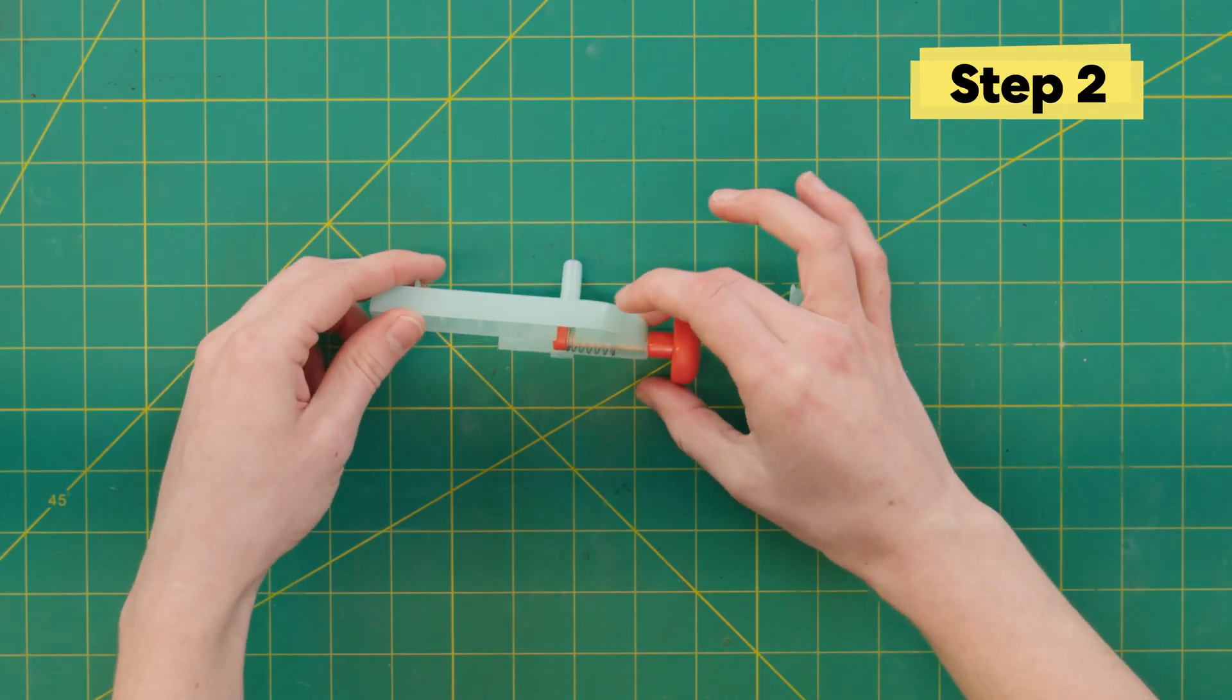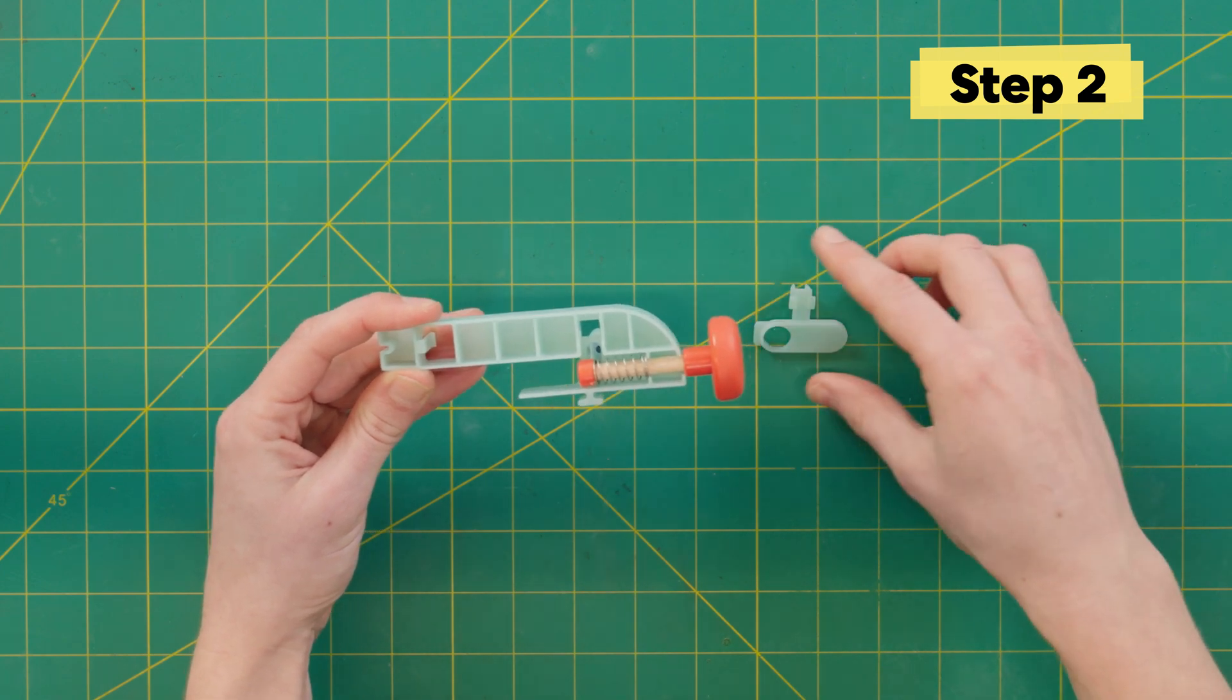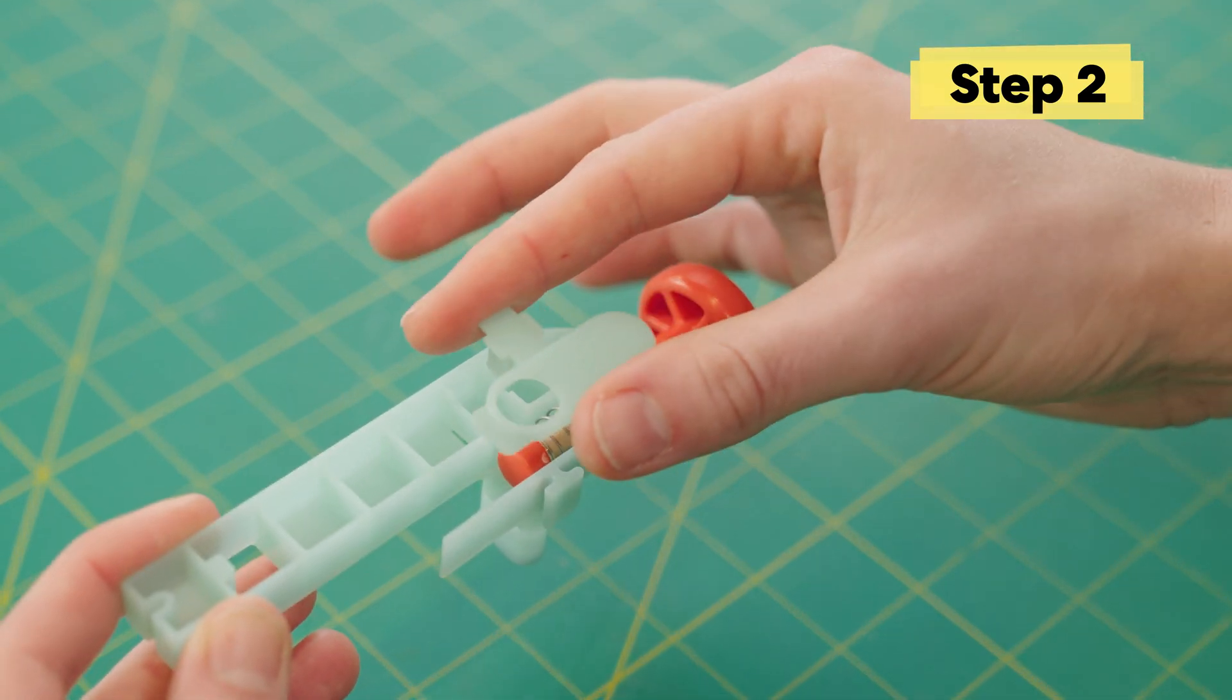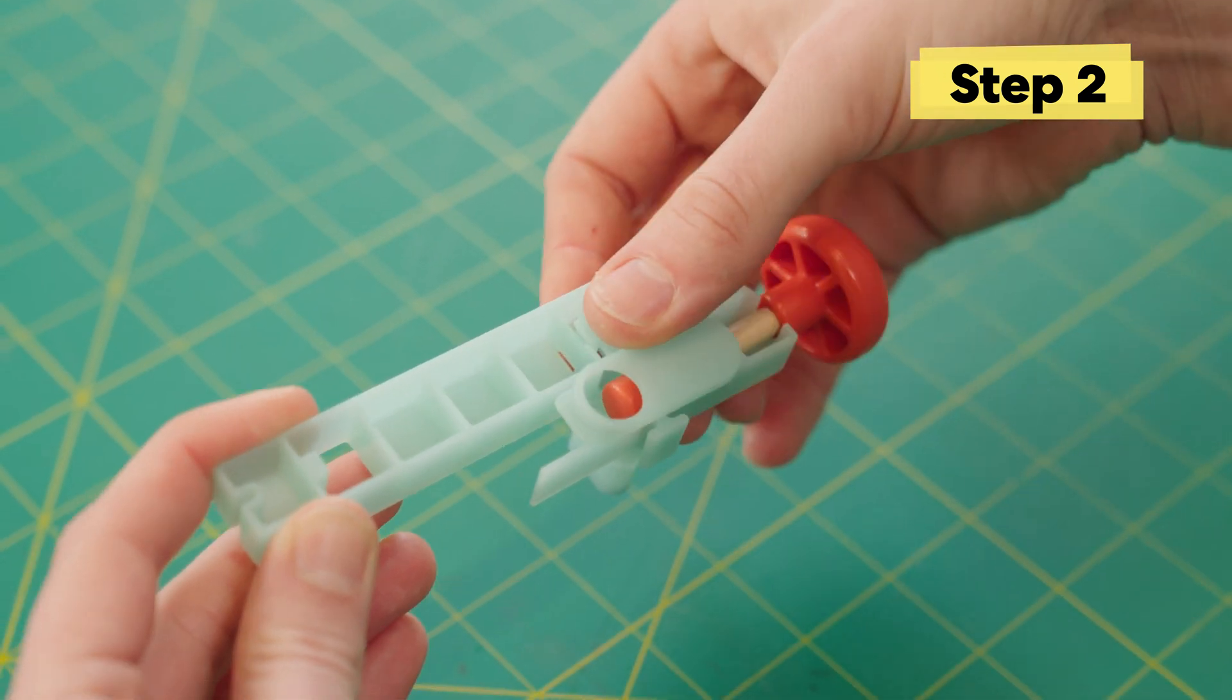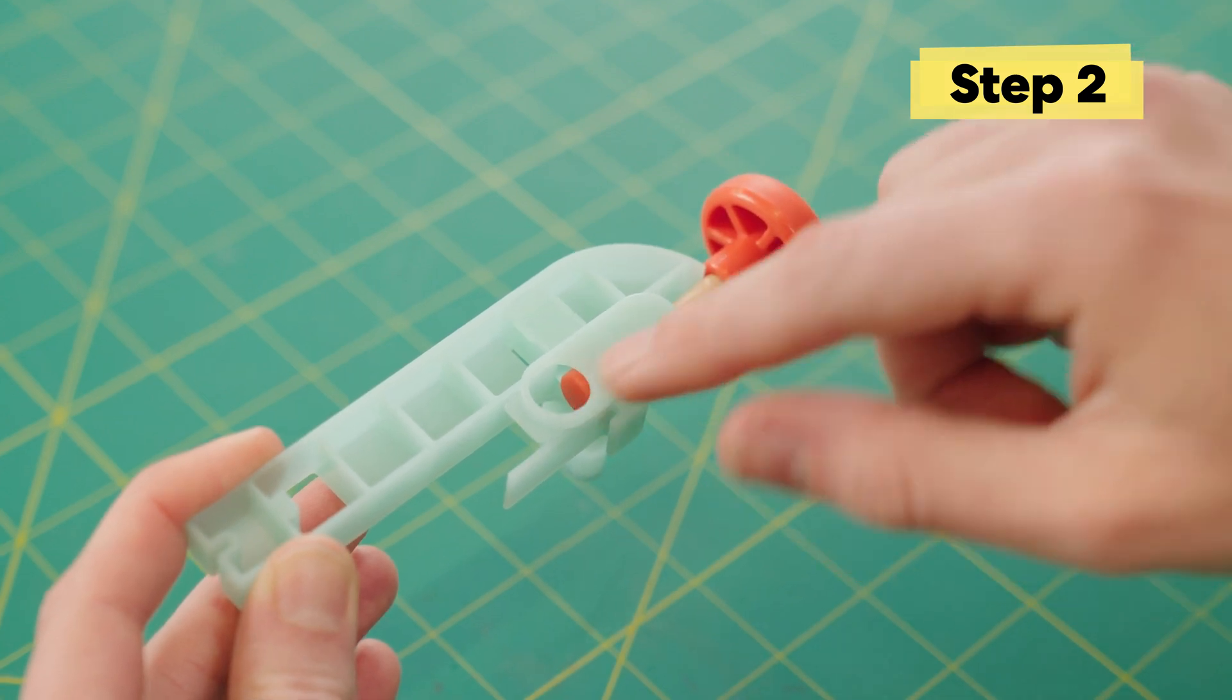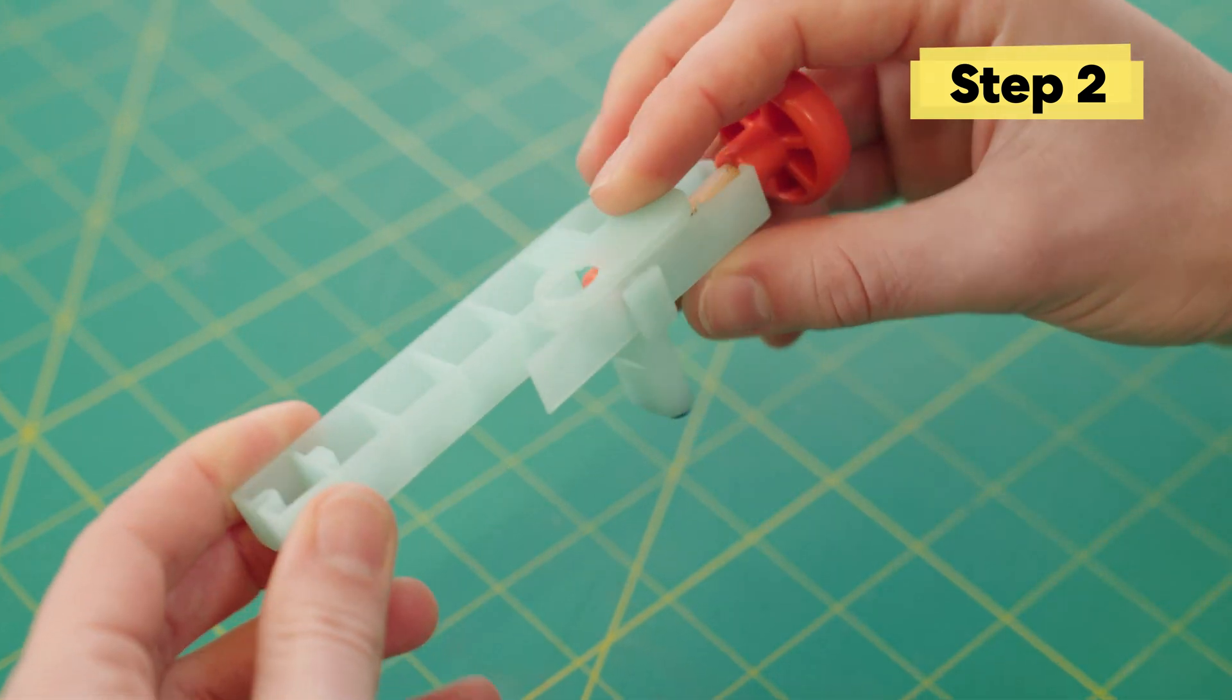Now that our plunger is assembled correctly, let's lock it all into place with this small blue piece. If it's installed properly, the end of the plunger should line up with the little hole in this piece and should conceal the spring completely.